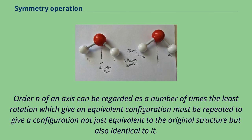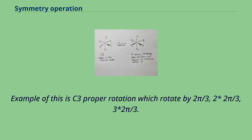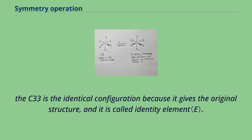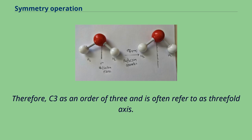Order N of an axis can be regarded as a number of times the least rotation which give an equivalent configuration must be repeated to give a configuration not just equivalent to the original structure but also identical to it. Example of this is C3 proper rotation which rotate by 2π/3, 2 times 2π/3, 3 times 2π/3. The symbol C3 represent the first rotation around the C3 axis which is 2π/3, C3^2 represent the second rotation which is by 2 times 2π/3 while the C3^3 represent rotation by 3 times 2π/3. The C3^3 is the identical configuration because it gives the original structure and it is called identity element. Therefore, C3 is an order of 3 and is often referred to as threefold axis.